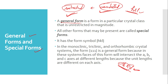A general form is a form in a particular crystal class that is unrestricted in magnitude — it can cut the axes anywhere, with no restrictions on the intercepts it makes on the crystallographic axes. Special forms are all other forms that may be present. The special form has symbol HKL, meaning the face must intersect every crystallographic axis at some point, and only one possible set of values exists for the indices HKL.